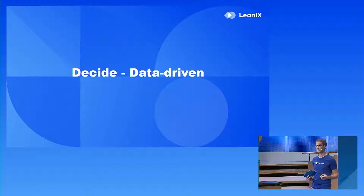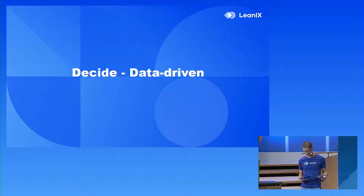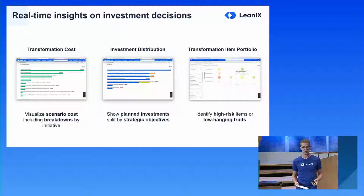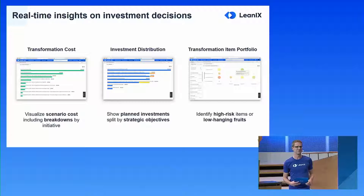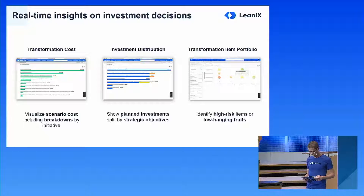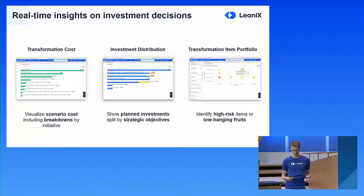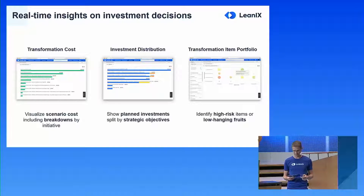Let's now talk about how you can make data-driven decisions. BTM comes with a number of different reports, and I want to highlight a few. The first new report I want to introduce is the transformation cost report. With it, you can gain insights on the actual cost of each scenario and understand where each dollar is spent — into single transformation items, but also whole scenarios — making it easy to understand where the money invested in a scenario is going.